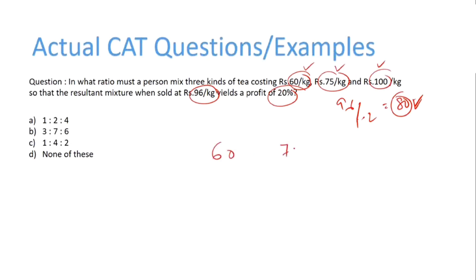Let's figure out how to use allegation when 3 units are involved. First off, 80 lies between 75 and 100. So if you use allegation here, you will realize there will be 4 is to 1. So, 4 units of 75 and 1 unit of 100.